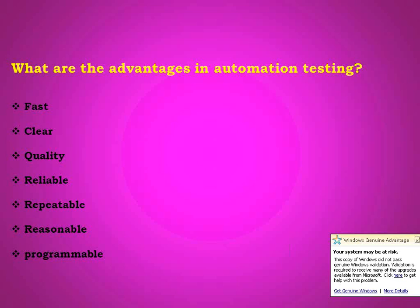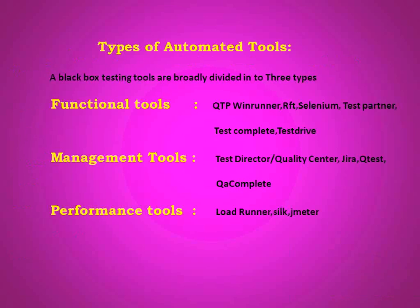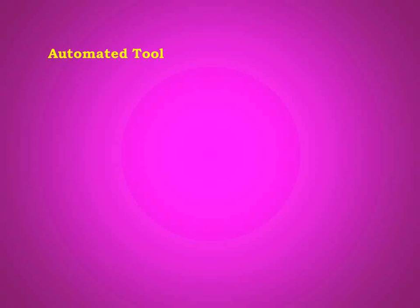An automated tool is nothing but an assistant of the testing engineer. If you want to work with any automation tool, you should know five basic things: first, how to give the instructions; second, how to give the information; third, how to use its recording facility; fourth, how to use its playback facility; and fifth, how to analyze the results. If you know these five things, you can work with any automation tool.